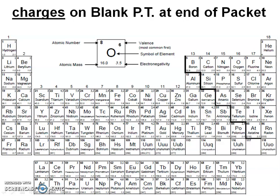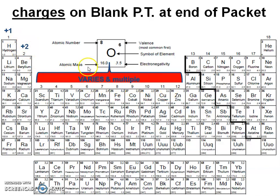Now let's look at that blank periodic table at the back of your packet. You should already have group numbers and valence electrons — now we're adding charges. Group one: plus one. Group two: plus two. Groups three through twelve will vary, and some elements have multiple charges. Group 13: plus three. Group 14 is tricky — right in the middle of eight, some elements give up four electrons and some gain four. Group 15: negative three. Group 16: negative two. Group 17: negative one. Group 18 has no charge — they're already stable. Remember helium is happy with two electrons, just like hydrogen.